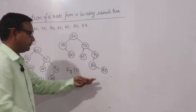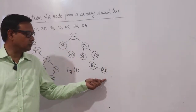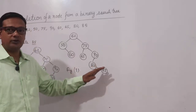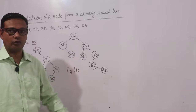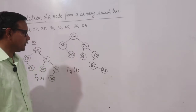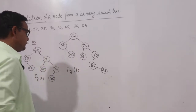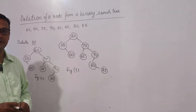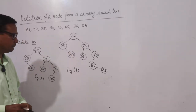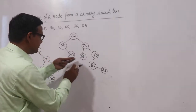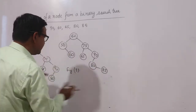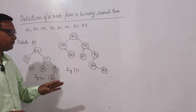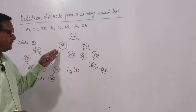Because 85 was the leaf node, there is no problem in deleting a leaf node. If I have to delete a node which is not a leaf node — for example, if I have to delete 60, 65, or 85, I can delete directly, no problem at all. If I have to delete a node having a single child, for example 50, 80, or 90, I will perform these operations.